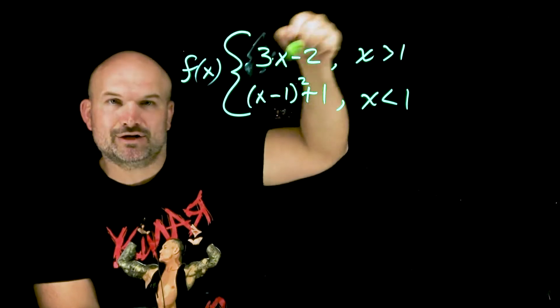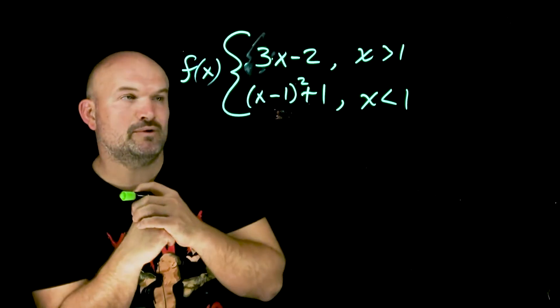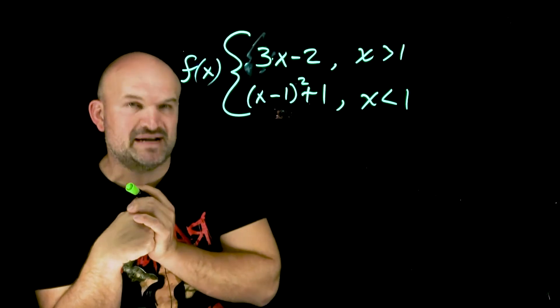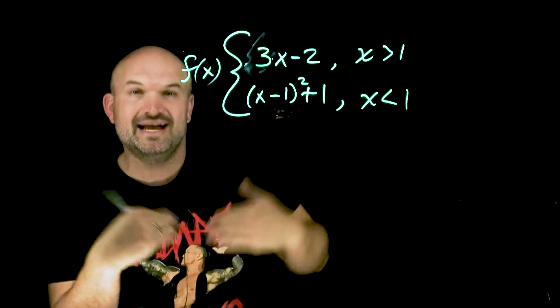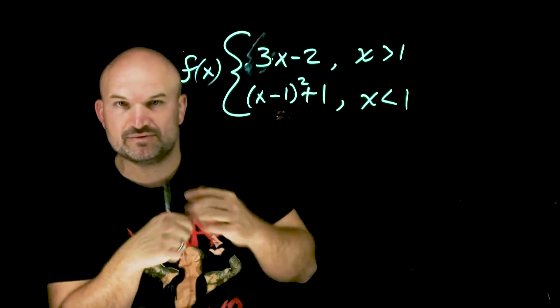Now, first of all, you need to know how to graph the equation. And if you struggle with graphing the equations, then the first tip is probably going to be best for you. So that first tip is just to separate your two equations, graph them separately, and then combine them to make your piecewise graph.